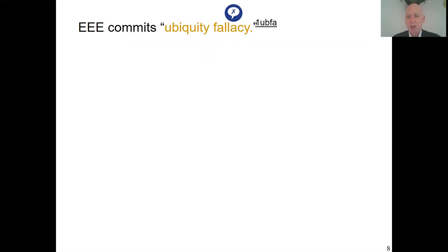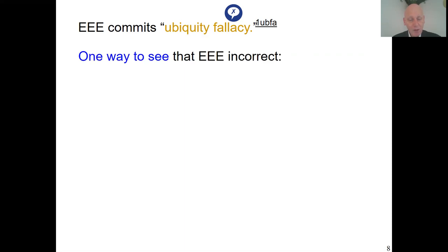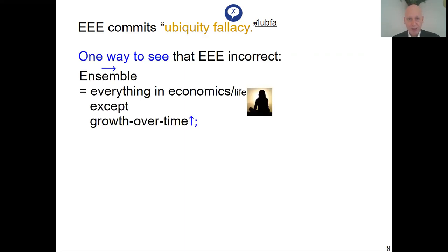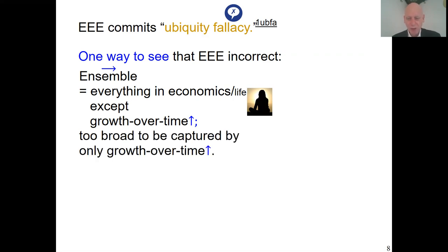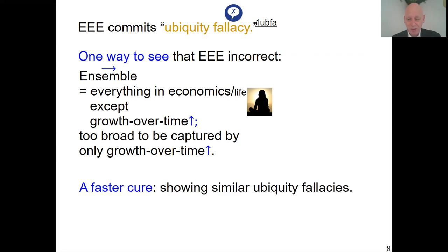There is an annotated superscript here — I explain later what it means. One way to see that extreme Ergodic Economics can't be correct is to realize that the ensemble captures everything in life except temporal growth. That is way too broad and diverse a category to be captured by one paradigm, one technique. Still, it's a tricky fallacy, and I know a faster cure of it: by showing other similar wrong claims from other fields.